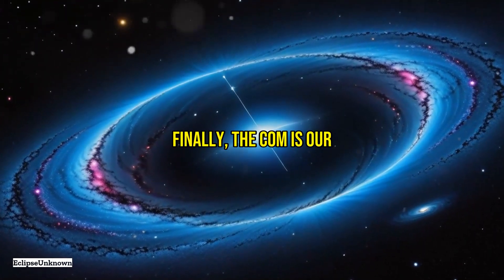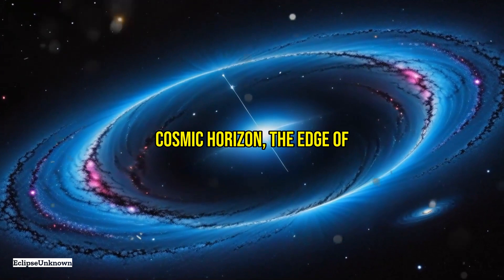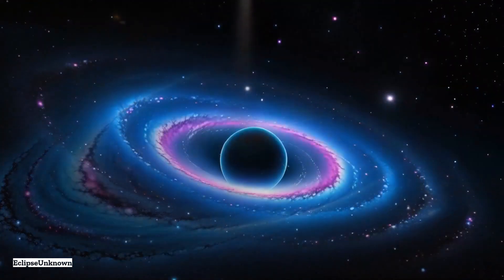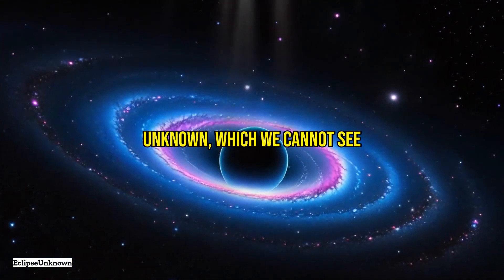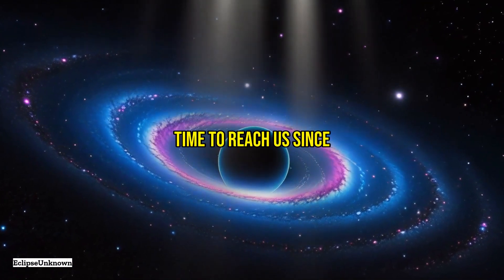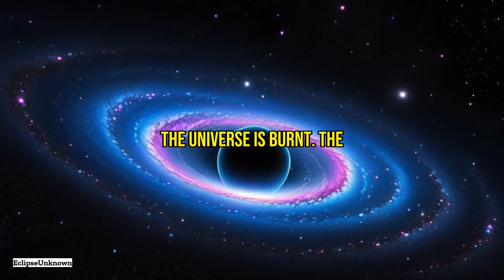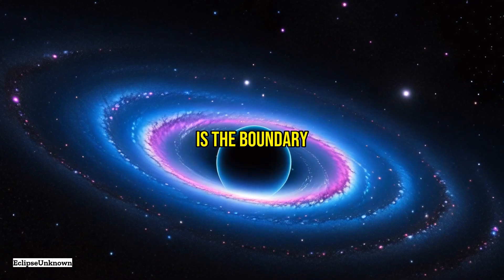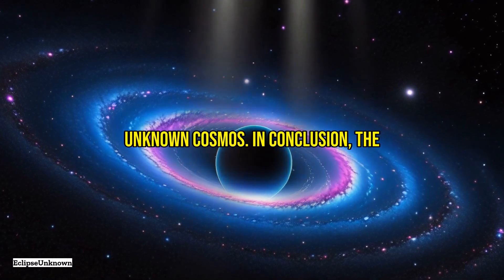Finally, the CMB is our cosmic horizon, the edge of the observable universe. Beyond this horizon lies the unknown, which we cannot see because light hasn't had enough time to reach us since the universe's birth. The background noise of the universe is the boundary between the known and the unknown cosmos.